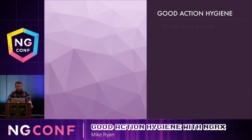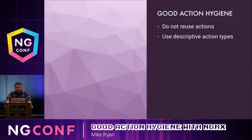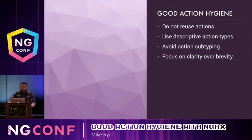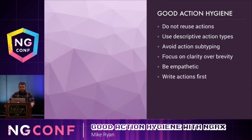So what is good action hygiene? It's not reusing actions — this will make it clear what inputs to reducers and effects really are, and make those reducers and effects easier to read in a year's time. It's using descriptive action types to improve debuggability and traceability in your NGRX application. It's about avoiding action subtyping to keep unnecessary complexity out of your reducers and effects and make your tests easier to write. It's about focusing on clarity over brevity — always lean towards explicit code over code that was fast to write. It's about empathy — anticipate how other developers on your team are going to help you build this application. And finally, it's about writing actions first, which will help you avoid these pitfalls and develop a deep understanding of the feature. Thank you.